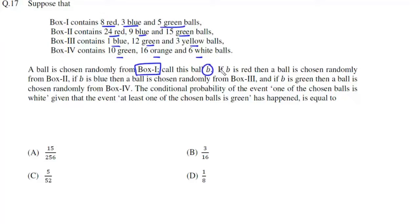A ball is chosen randomly from box 1 — call this ball B. If B is red, then a ball is chosen from box 2. If B is blue, then it is chosen from box 3. And if it is green, then a ball is chosen randomly from box 4.